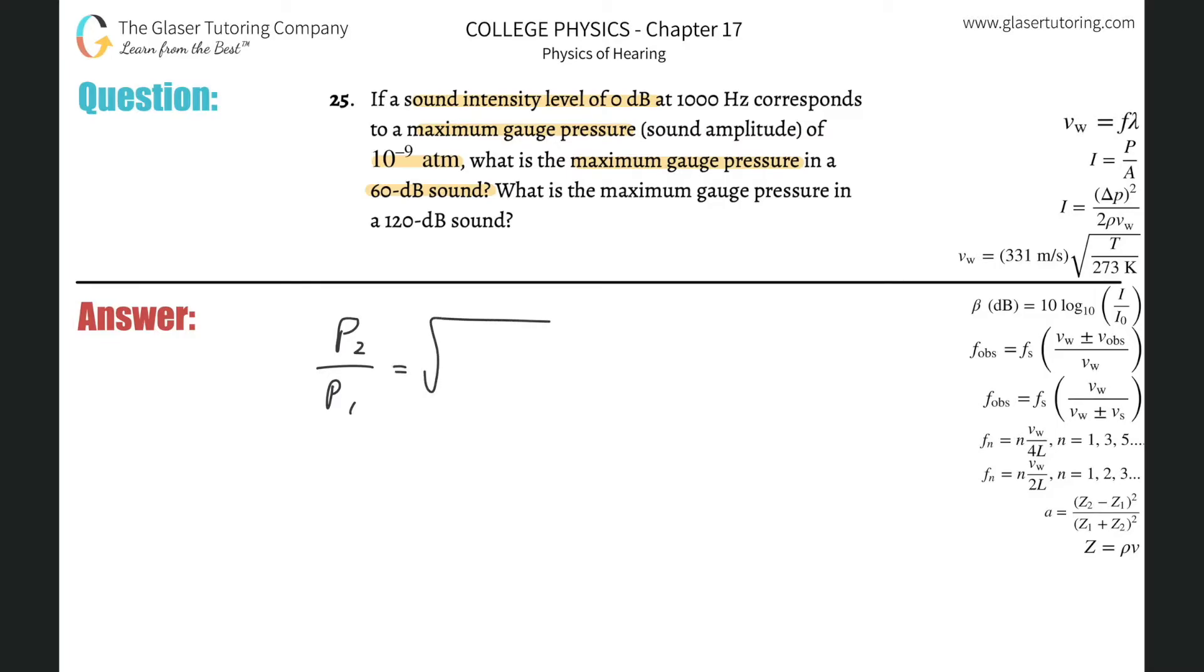So this is simply p2 relative to p1 will be equal to the square root of 10 raised to beta, the sound intensity level of 2 minus the sound intensity level of 1, all divided then by 10.